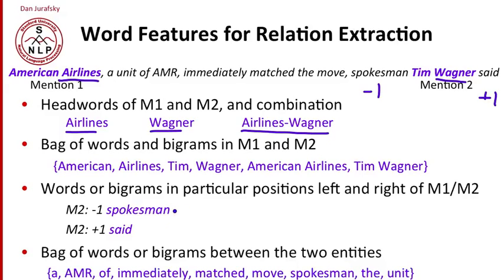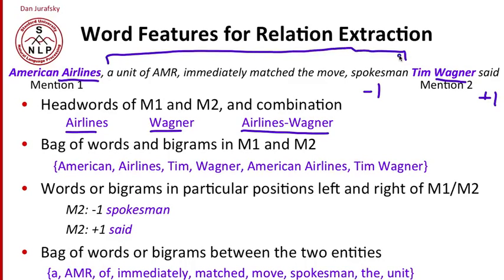We can also use the words that are in between the two mentions — the "between" region. For example, "a unit of AMR immediately matched the move spokesman" falls between American Airlines and Tim Wagner. We can include a bag of those words: A, AMR, of, immediately, and so on. If we have enough compute power, we can include bags of bigrams as well — all pairs of words between the two entities.